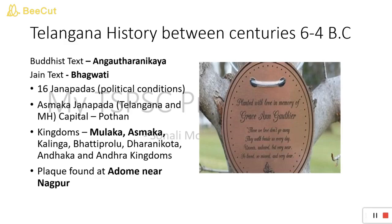What does the term Janapada mean? It is a Sanskrit word — 'Jana' means people, 'Padas' means footsteps. Overall, Janapada refers to the people who were settled in a particular region, and their existence has been recorded. One of these 16 Janapadas is the Asmaka Janapada, which is our main focus today.